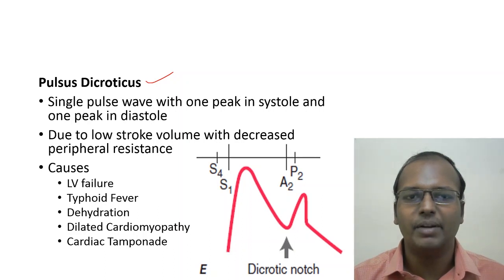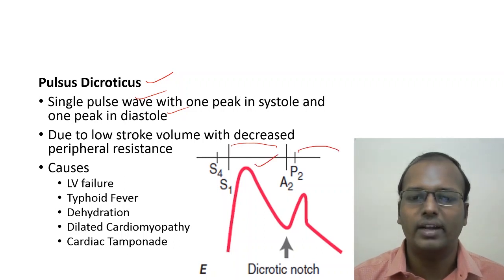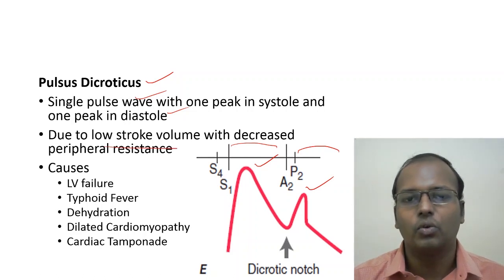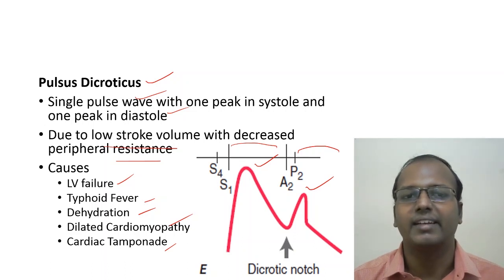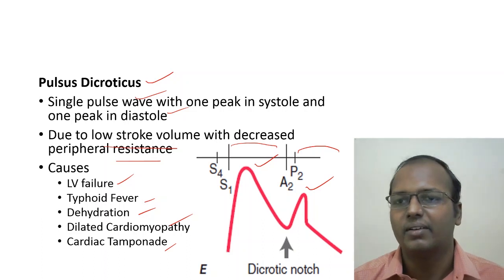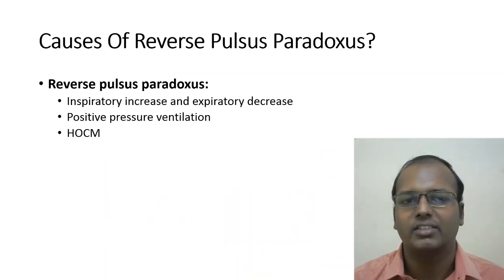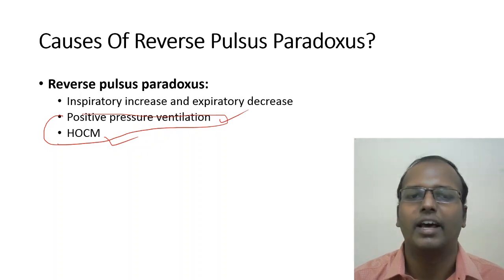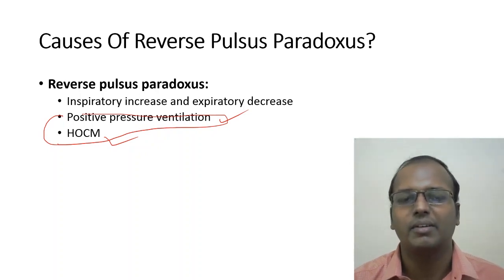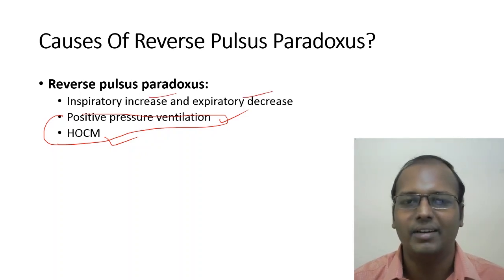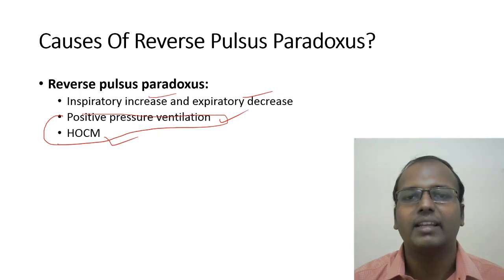Pulsus dicrotic: a single pulse wave with one peak in systole and one peak in diastole (between S2 and S1). It occurs in low stroke volume with decreased peripheral resistance. Causes include LV failure, typhoid fever (due to toxin release), dehydration, dilated cardiomyopathy, and cardiac tamponade. Reverse pulsus paradoxus — inspiratory increase and expiratory decrease in blood pressure — occurs in HOCM and positive pressure ventilation.